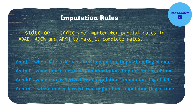This conversion of a partial date into a complete date is called date imputation. There are some basic rules, but for your studies or protocol you should follow your SAP. Based on the imputation rule mentioned in the SAP, you can impute your dates and make it a complete date in ADaM.